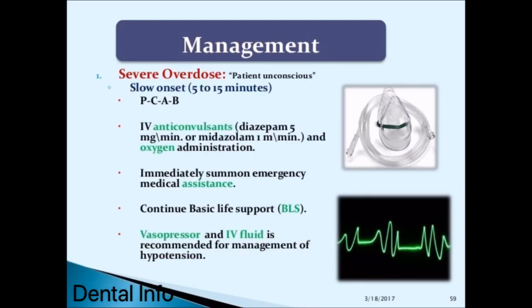Severe overdose, patient unconscious, slow onset 5–15 minutes: follow PCAB, administer anticonvulsants—diazepam 5 mg/min or midazolam 1 mg/min—administer oxygen, immediately summon emergency medical assistance, continue basic life support (BLS), and vasopressors and IV fluid are recommended for management of hypotension.